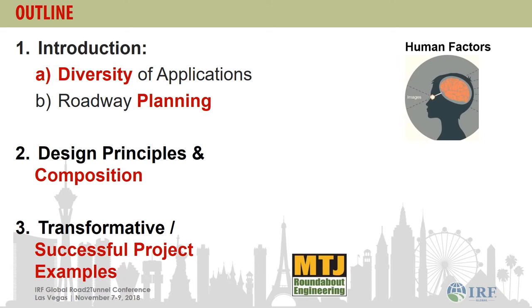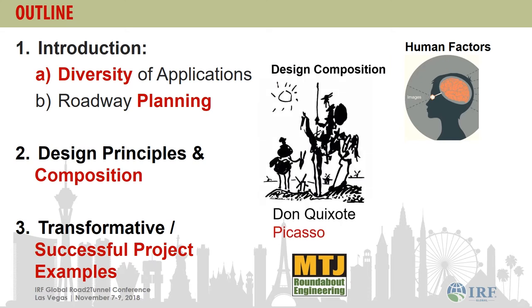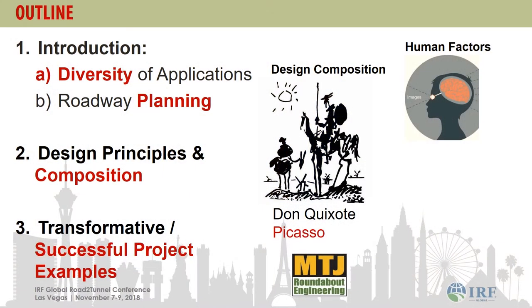Roundabouts are transformative. They have the ability to reshape our roadways in many ways that traffic planning with signals don't allow. Spread through the course of the presentation today are human factors and design composition. When you place a roundabout in a context, that roundabout design has to work in that context. Design composition is both the roadway and the roundabout intersection working together.